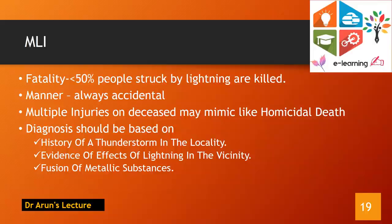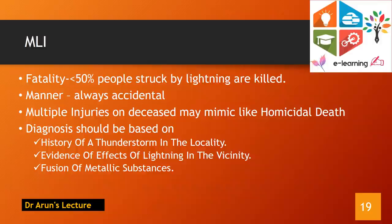To avoid misclassification, a detailed history followed by meticulous external as well as internal examination of the deceased is required. In some cases, a history of thunderstorm in the locality, along with seeing the patterns of injury on external and internal organs, allows the autopsy surgeon to give an opinion of lightning injury. Other associated features like burning of clothes, and metallization and fusion of metallic objects among the belongings of the individual, together with correlation and ruling out other natural causes of death, allow a final opinion of lightning injury to be given.